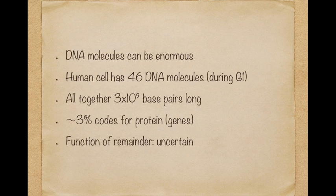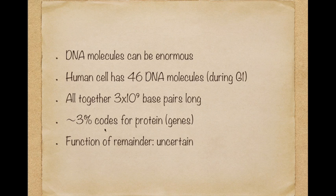DNA molecules can be enormous. A human cell has 46 DNA molecules during G1, but during the S phase it doubles its DNA, so it has 92 DNA molecules. All together during G1, it has 3×10⁹ base pairs long — that means 6×10⁹ bases, or nucleotides. Of these, 3% code for protein, and the function of the remainder is uncertain.